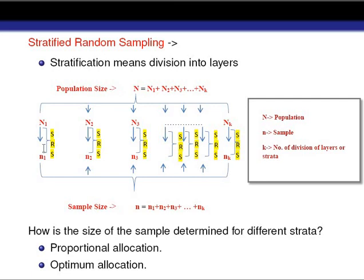If in our study we are collecting information for only one particular character, it is easy to divide the whole population according to that characteristic into different strata. But if more than one characteristic is present, it becomes somewhat difficult to decide on what basis to divide the population. In that case we will use previous information or subject expert knowledge to choose which characteristic is the most effective one.